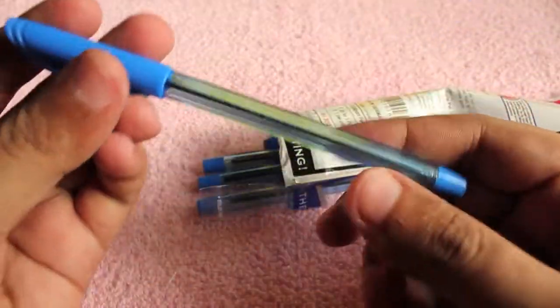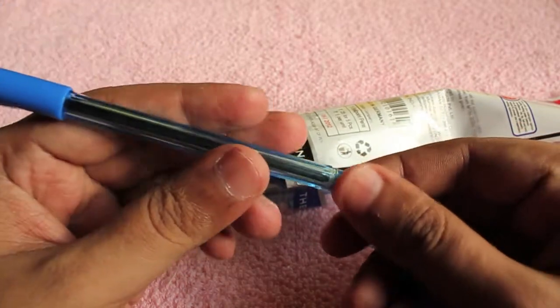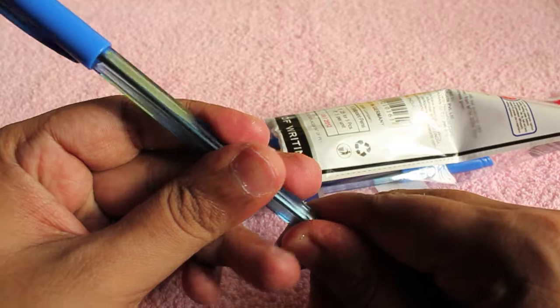This is how it looks. Usually you will have a transparent shell so that you know how much ink you have left.